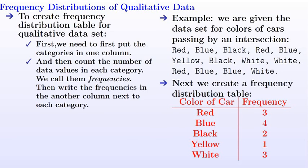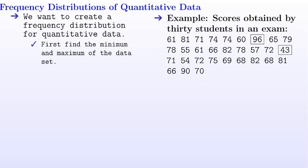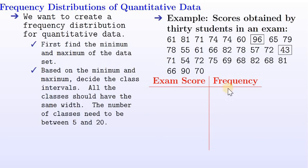Now let's create a frequency distribution for quantitative data. First, we need to find the minimum and maximum of the data set. Looking at this data set, the minimum is 43, shown inside a square box, and the maximum is 96, also inside a square box. We make a table with two columns: exam score and frequency. Based on the minimum and maximum, we decide the class intervals — all classes should have the same width, and the number of classes should be between 5 and 20.